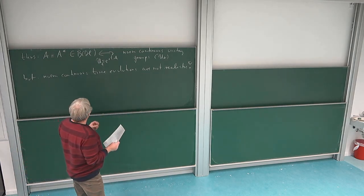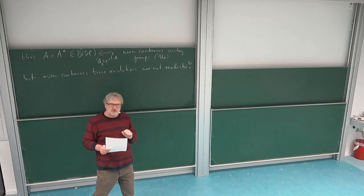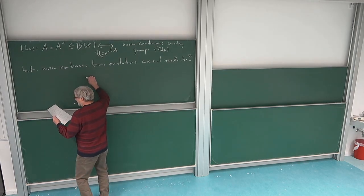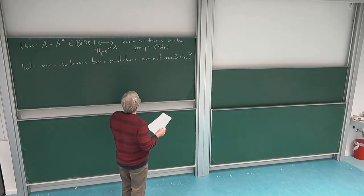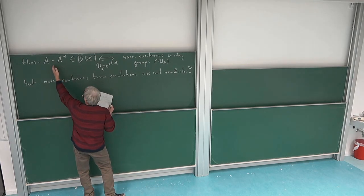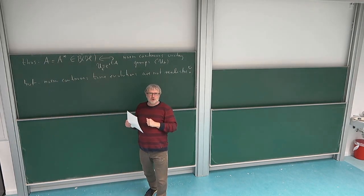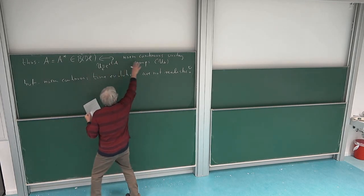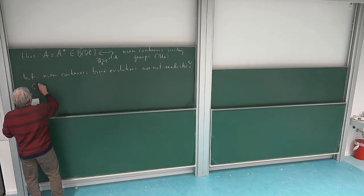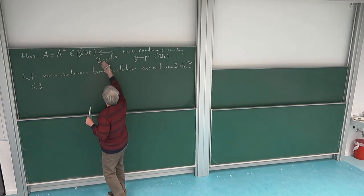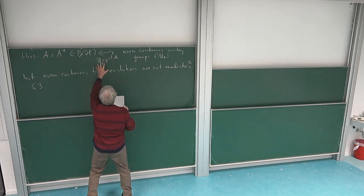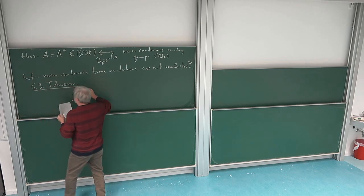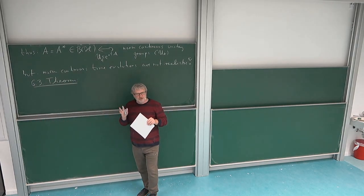First we should think about what this means on the side of the unitary groups: the norm continuity should be weakened to something. The next theorem covers the easy direction — we start from a generator which is still self-adjoint but we allow it to be unbounded, and we see what we get. This is again easy given the functional calculus, because then we can define this without problem and get the properties from our functional calculus. I'll write it down but not prove it; we can do that as an exercise.